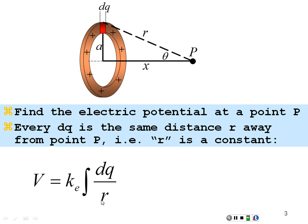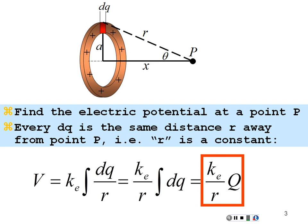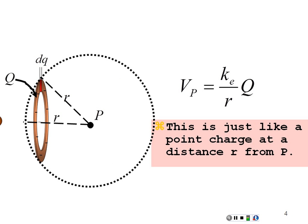Since r is constant, we can take it out of the integral. So we have k over r times the integration of dq around this ring, and hence our potential would simply be k q over r. It would look like a point charge. In fact, the potential that we would experience at point P would be no different than if the ring of charge were a point charge located a pure distance r away from where we are. We wouldn't be able to know the difference.